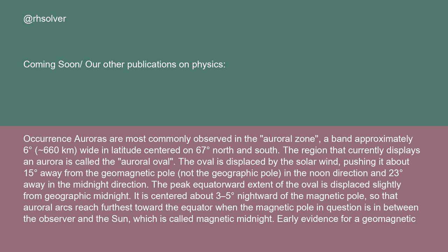Auroras are most commonly observed in the auroral zone, a band approximately six degrees (660 km) wide in latitude centered on 67 degrees north and south. The region currently displaying an aurora is called the auroral oval. The oval is displaced by the solar wind, pushing it about 15 degrees away from the geomagnetic pole in the noon direction and 23 degrees away in the midnight direction. Auroral arcs reach furthest toward the equator when the magnetic pole is between the observer and the sun — called magnetic midnight.